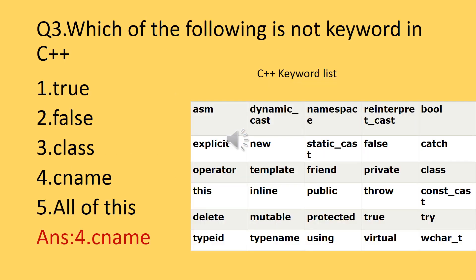Question number three: which of the following is not a keyword in C++? The answer is 'C name.' C name is a variable name, not a keyword. True, false, class, catch, try, using, and virtual are all C++ keywords. So the answer is C name.